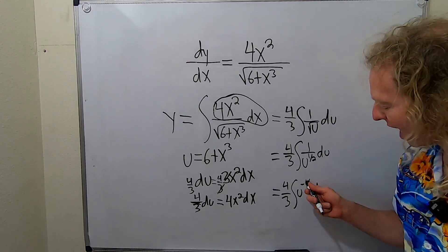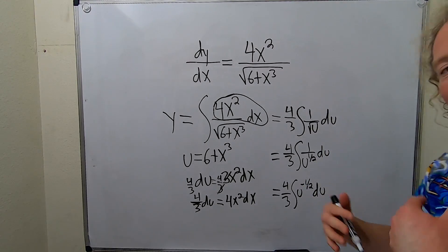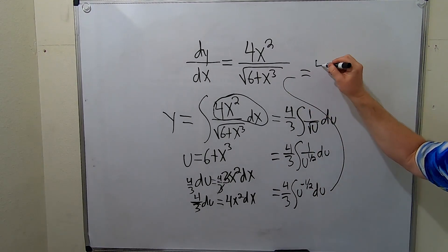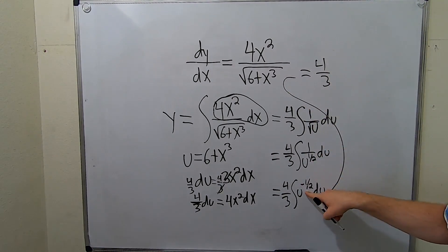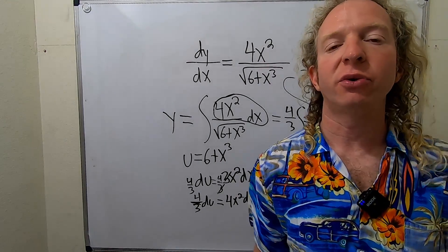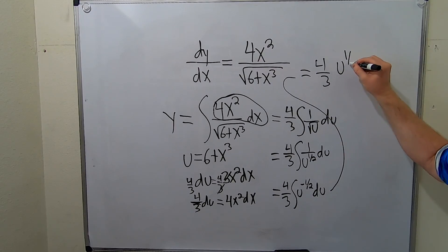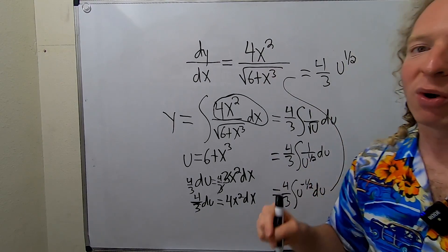So now we add 1. So we add 1 and divide by the results. So now you drop the integral sign. Let me come up here. I'm running out of room. This will be 4 thirds. So we add 1 to the negative 1 half. So negative 1 half plus 1 is 1 half. So this is u to the 1 half.